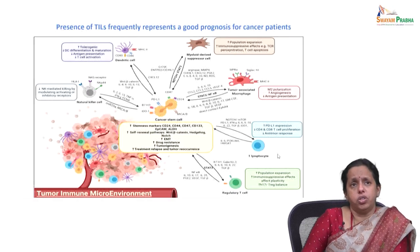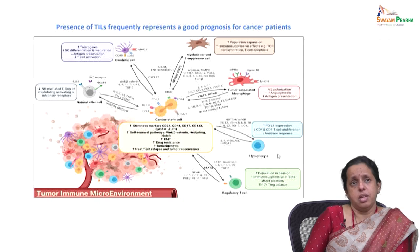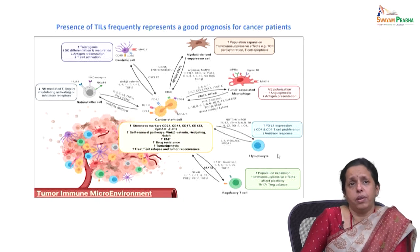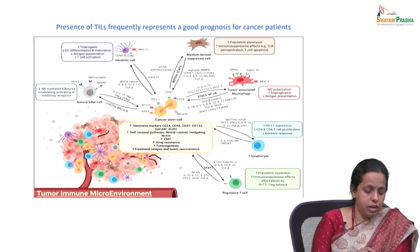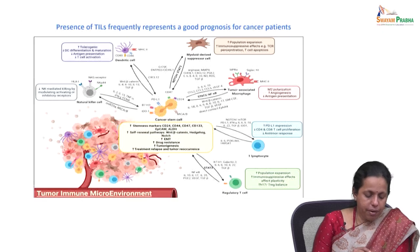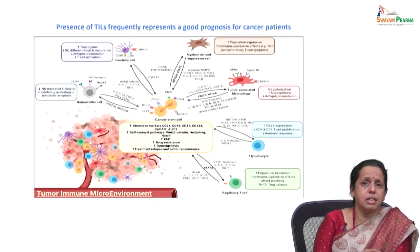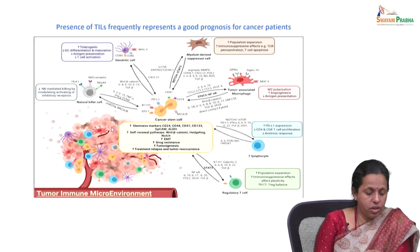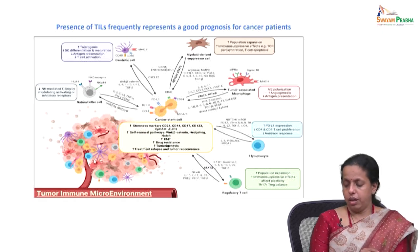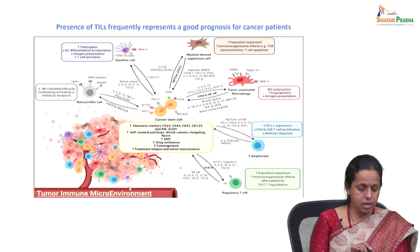Tumor infiltrating lymphocytes (TILs) were introduced previously. A large presence of TILs indicates good prognosis. TILs represent a lymphocytic population. As mentioned, a cancer cell is never just a cancer cell alone — it exists within a tumor microenvironment containing cancer-associated cells, lymphocytes including CD4 cells, cytokines, growth factors, macrophages, and various other cell types.